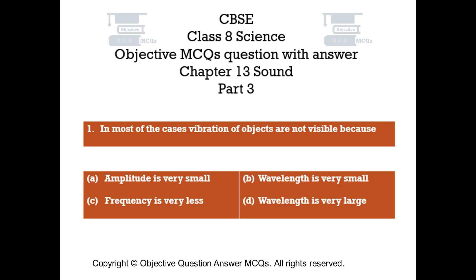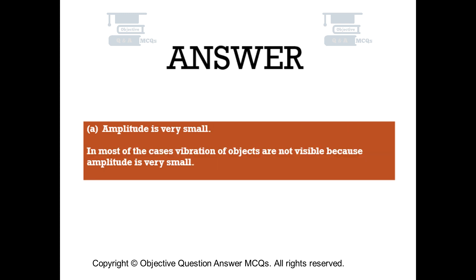Question number 1. In most of the cases, vibration of objects are not visible because: Option A – amplitude is very small. Option B – wavelength is very small. Option C – frequency is very less. Option D – wavelength is very large. The right answer is option A. In most of the cases, vibration of objects are not visible because amplitude is very small.